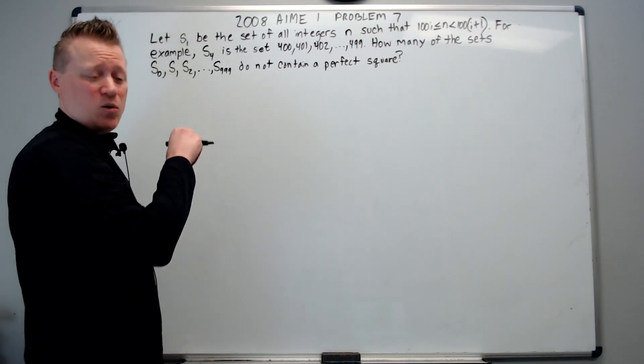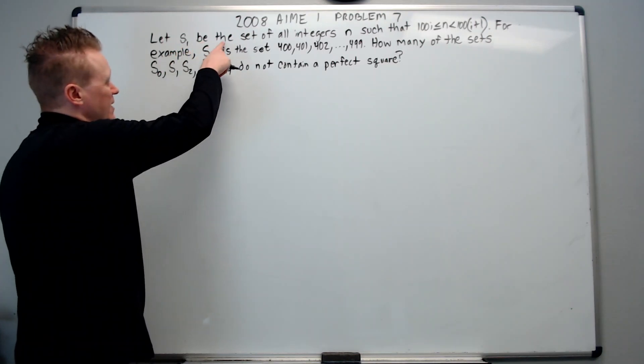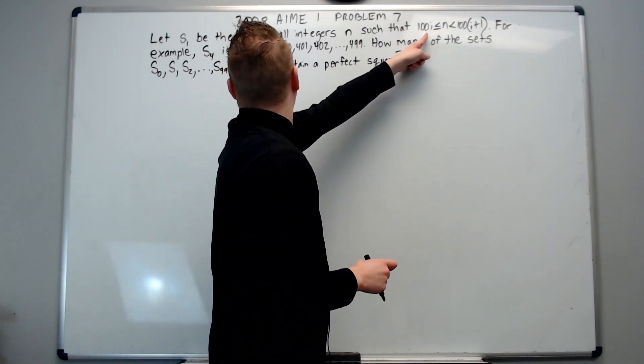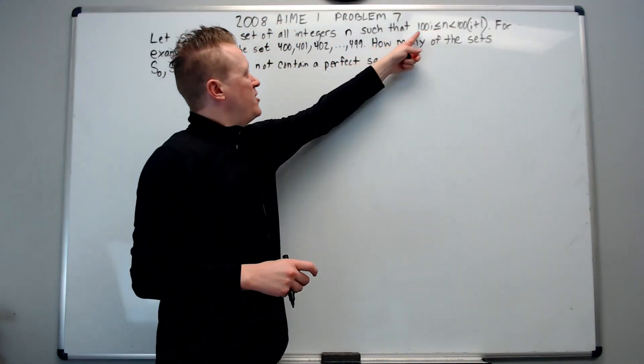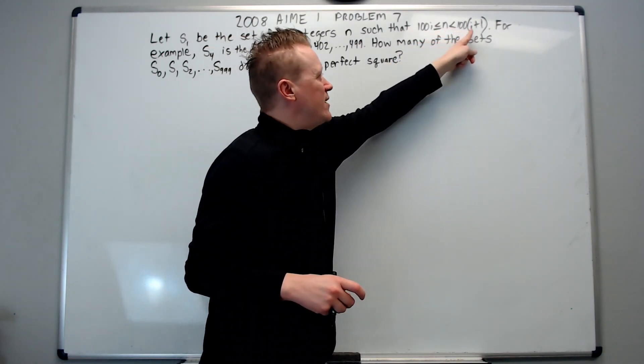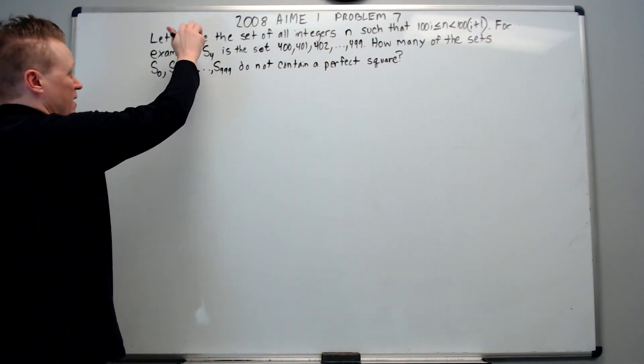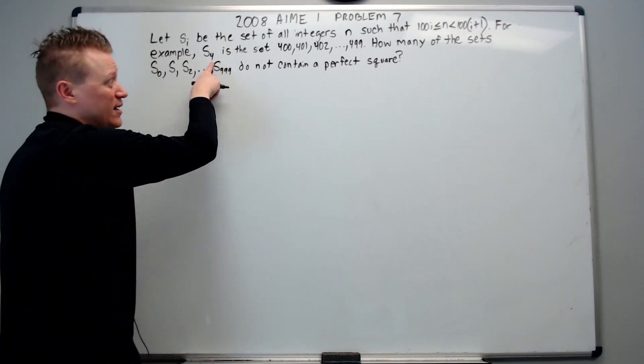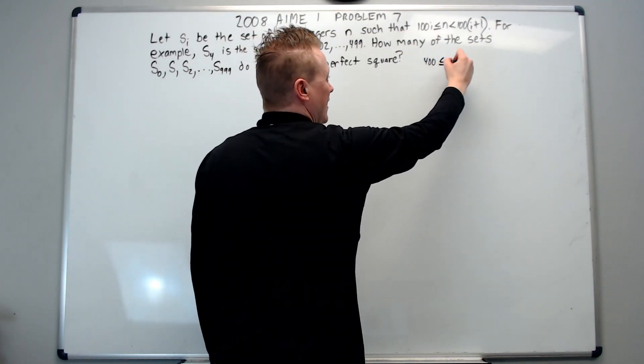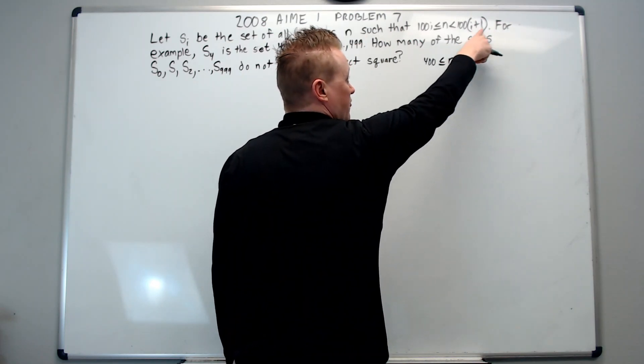This was done by request for another person who commented on a previous video. Let s_i be the set of all integers n such that 100i is less than or equal to n is less than 100 times i plus 1. For example, s sub 4, note that that would mean that the i is now a 4. And if the i is a 4, we can plug it into here to get that 400 is less than or equal to n is less than or equal to 500, which is 4 plus 1 times 100.